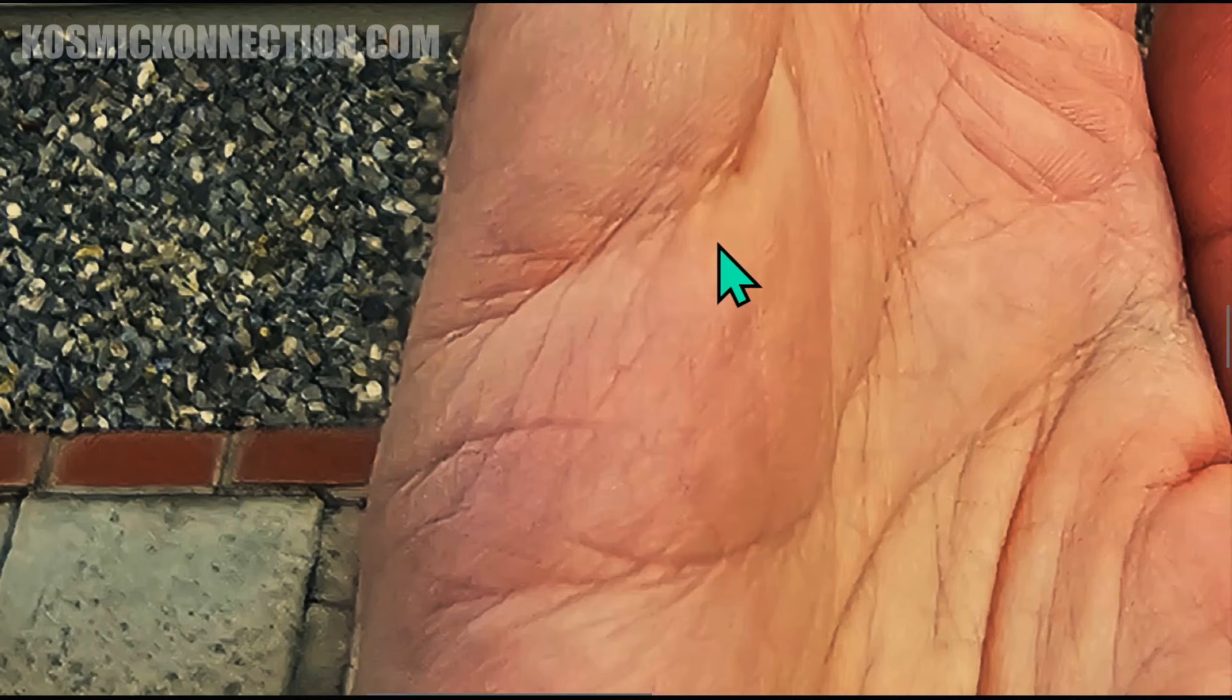As we take a look, you've got two very strong lines here, and then you've got a third line here. Now that could either represent a third child...